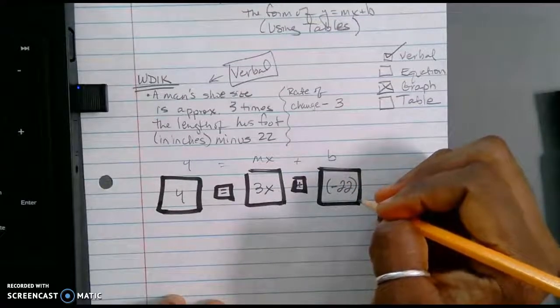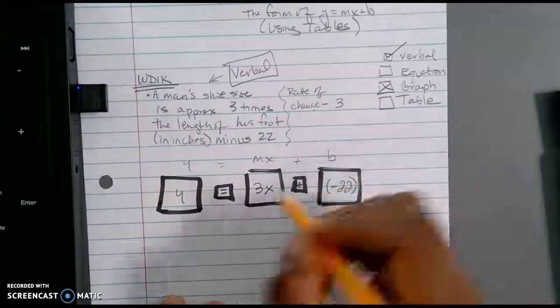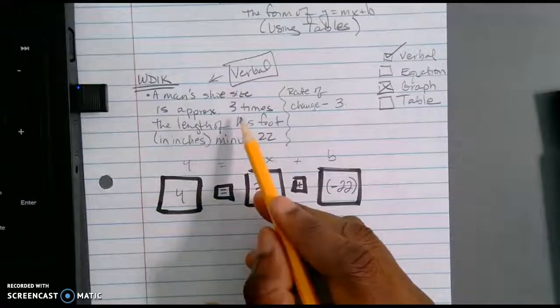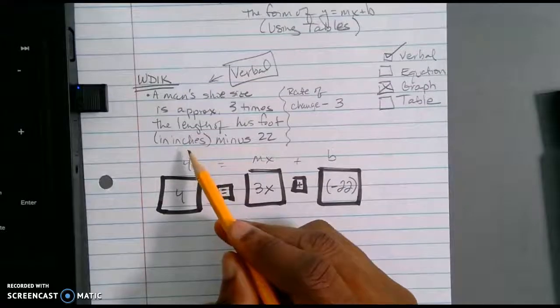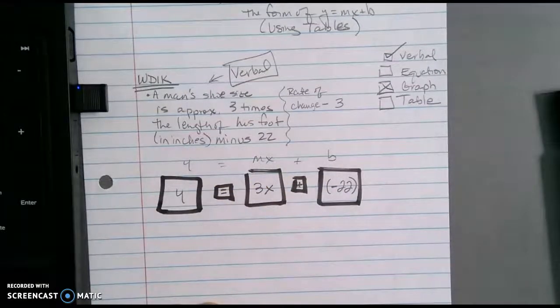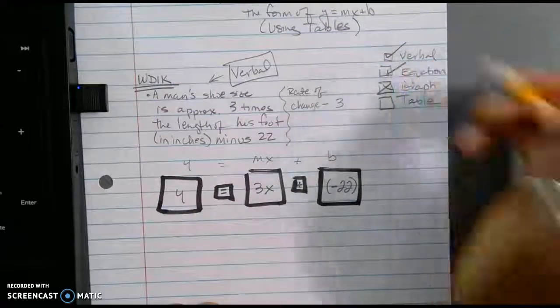So I'm going to multiply three times x because for every inch, it's going to change by three. So multiplying that by three plus, or in this case, plus a negative 22. Why am I adding a negative 22? Doesn't that mean the exact same thing as subtracting 22? Sure. And because here in the problem, it says minus 22. So adding a negative 22, same thing. So at this point, I can check off the equation.